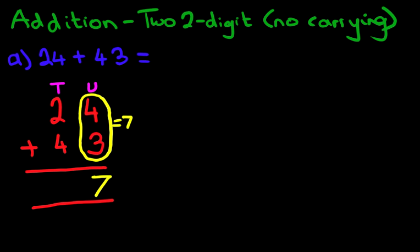Now we add the tens column. That is these two numbers here. 2 plus 4. What is 2 plus 4? Well, that equals 6. So we can write down 6 here. And we have our answer. 24 plus 43 is 67.